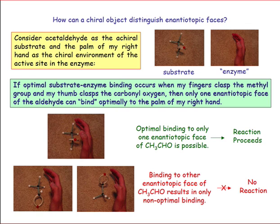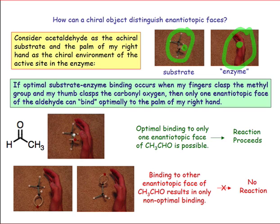The way an enzyme, or really any chiral object, does this is by possessing particular groups at particular positions such that there's an optimal orientation of the chiral object for binding. For instance, if you consider this substrate and Dr. Moore's hand as the enzyme, his thumb is an ideal binding point for the carbonyl oxygen. Only one orientation of the molecule fits the orientation of his hand, assuming that orientation is fixed, so only this orientation is favorable for binding the substrate.